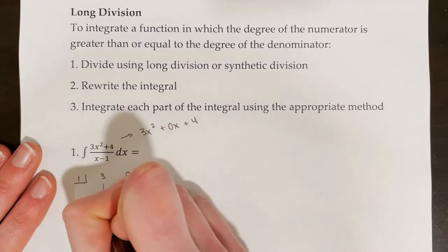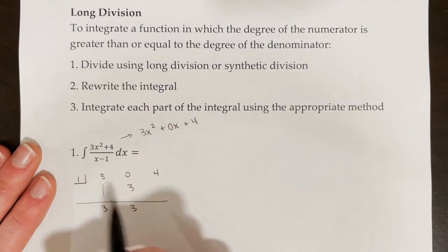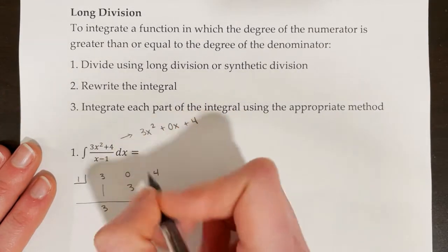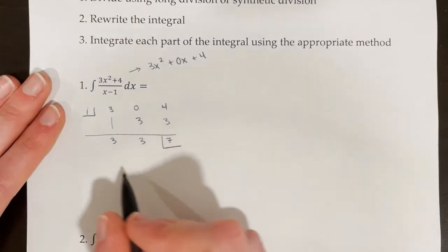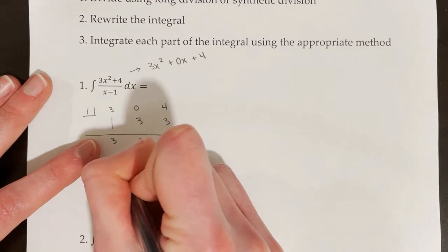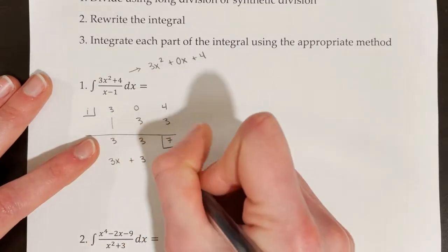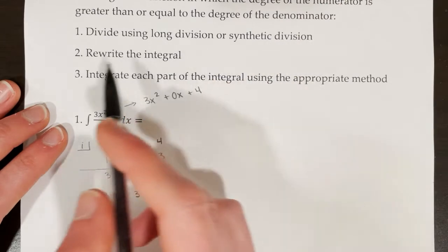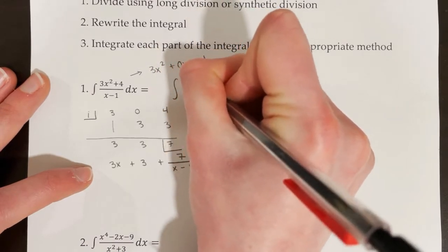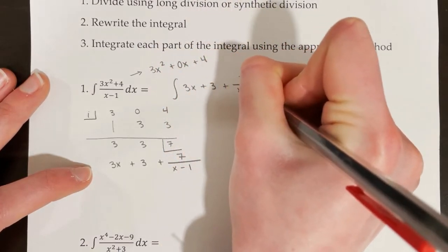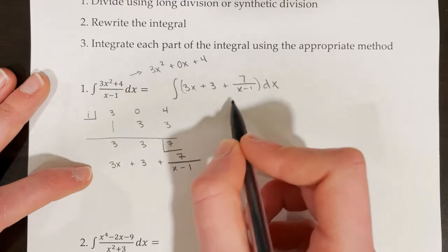We bring the 3 down. 1 × 3 = 3; 0 + 3 = 3; 1 × 3 = 3; 4 + 3 = 7. The 7 is our remainder. So our result is 3x + 3 + 7/(x − 1). Step 2 is to rewrite the integral as the integral of (3x + 3 + 7/(x − 1)) dx.